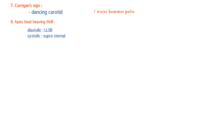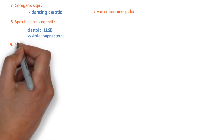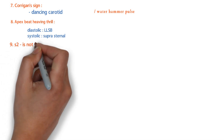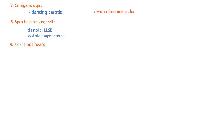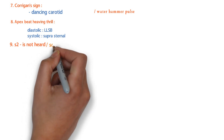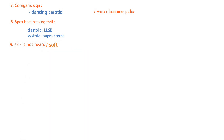In severe aortic regurgitation, S2 may be absent or soft. S2 is normally heard when the aortic and pulmonary valves close. Since the defect is related to the aortic valve, S2 may be soft or may not be heard at all.